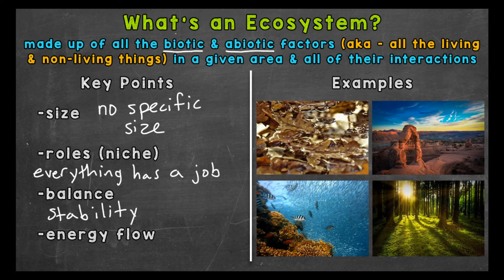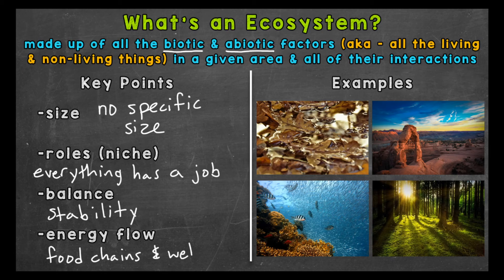Lastly, we get to energy flow. All energy starts with the sun — that is very important. The producers within an ecosystem take that energy from the sun and convert it to chemical energy that can be used here on Earth. That process is called photosynthesis. Food chains and food webs are representations of the energy flow within an ecosystem. I have separate videos that go into more detail on those — I'll add those links down in the description. Energy flow is important to the survival of organisms and the ecosystem itself.